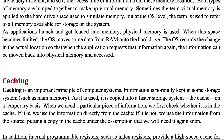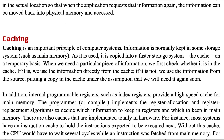When an application needs to work on data, the data needs to be brought from the hard disk drive into the main memory, and the CPU works on that data in the memory. Caching is an important principle in computer systems. Normally, information is kept in some storage system, and as it is used, it is copied into a faster storage system.